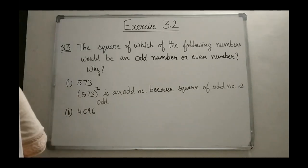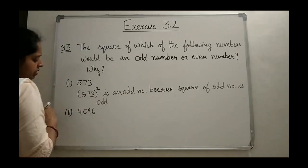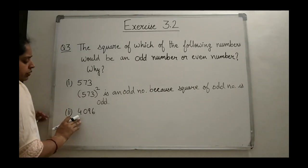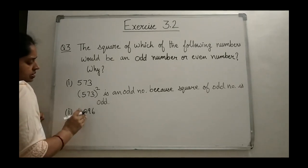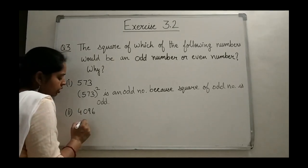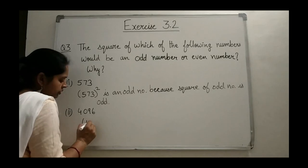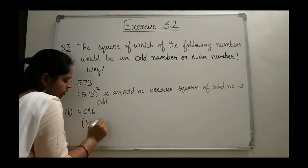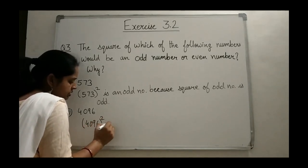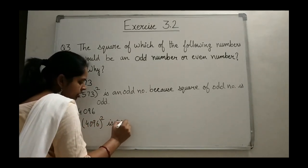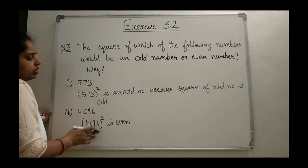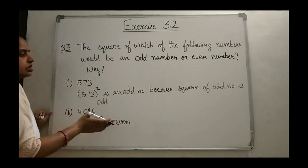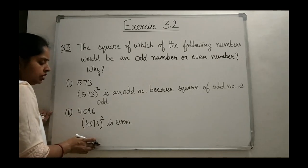You can write the reason: the square of an odd number is odd. Also, the number 4096 is an even number, so the square of 4096 is an even number. The reason is that this is an even number and the square of an even number is even.